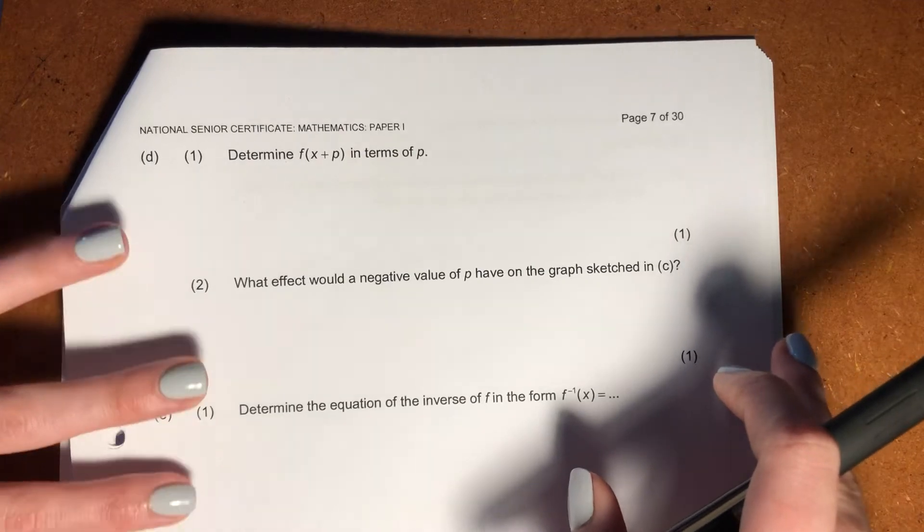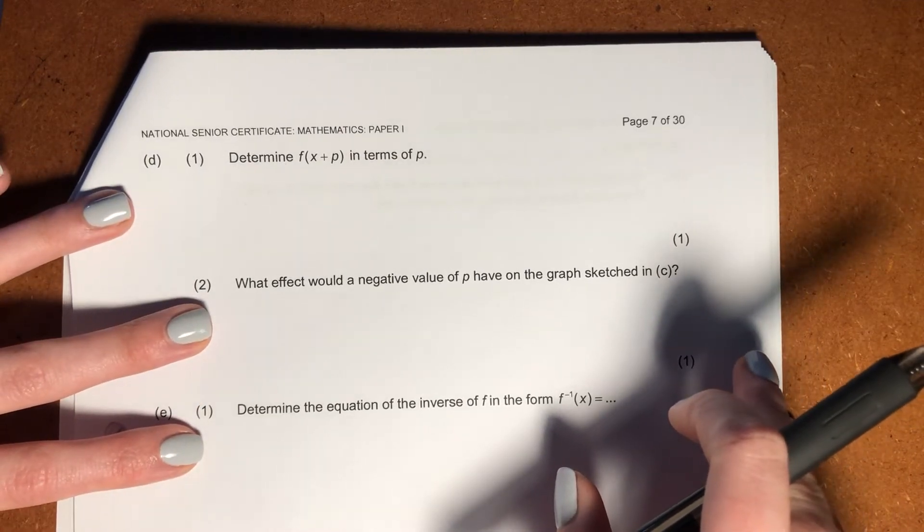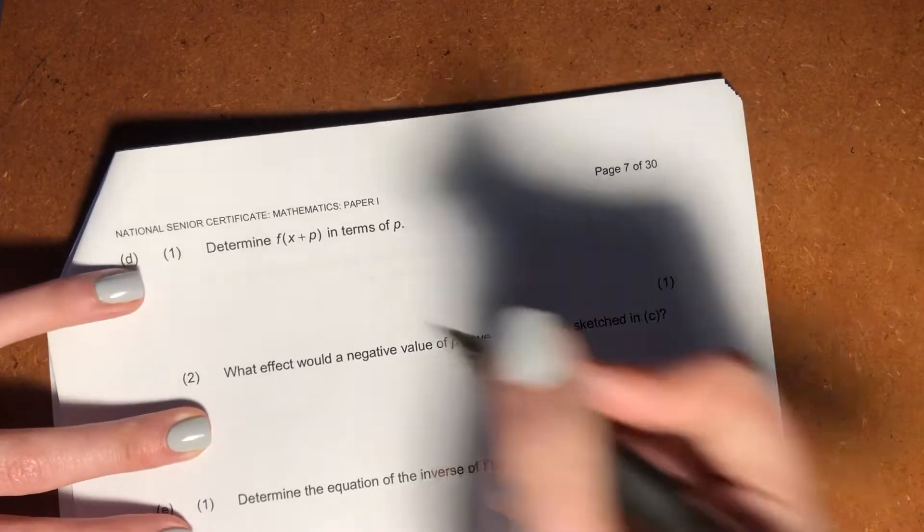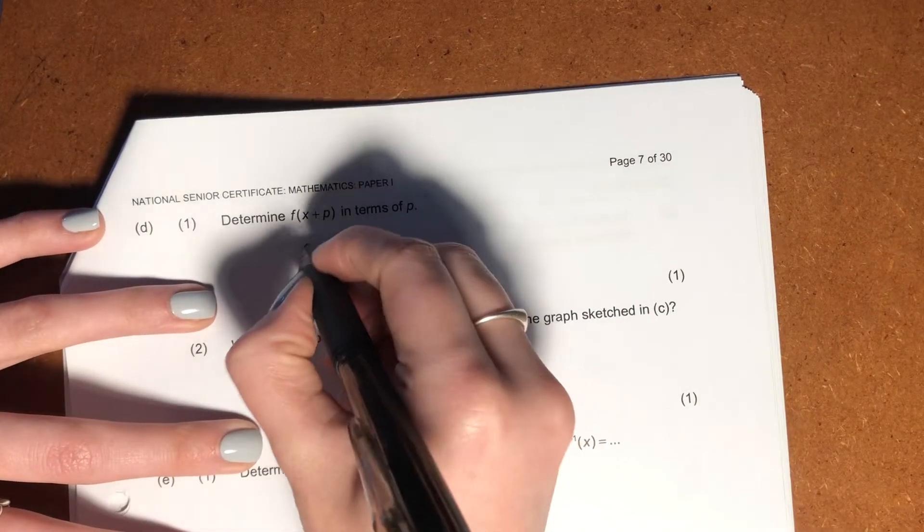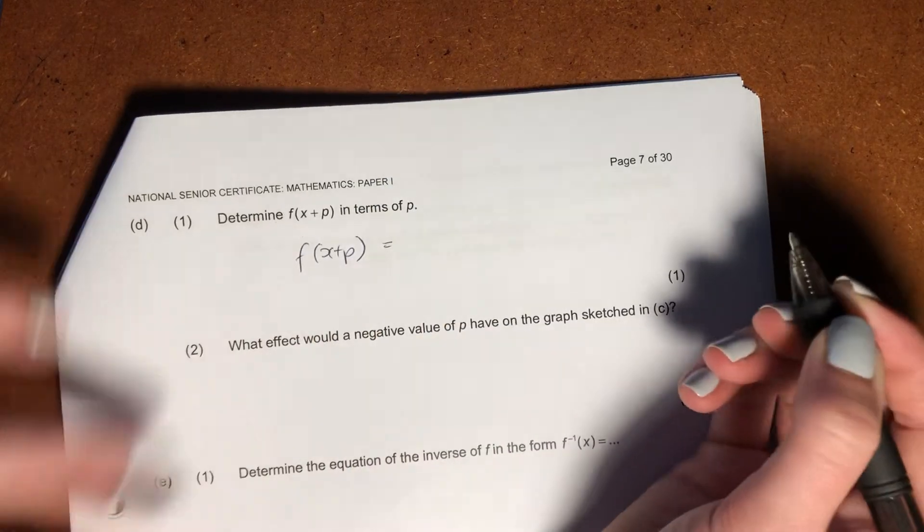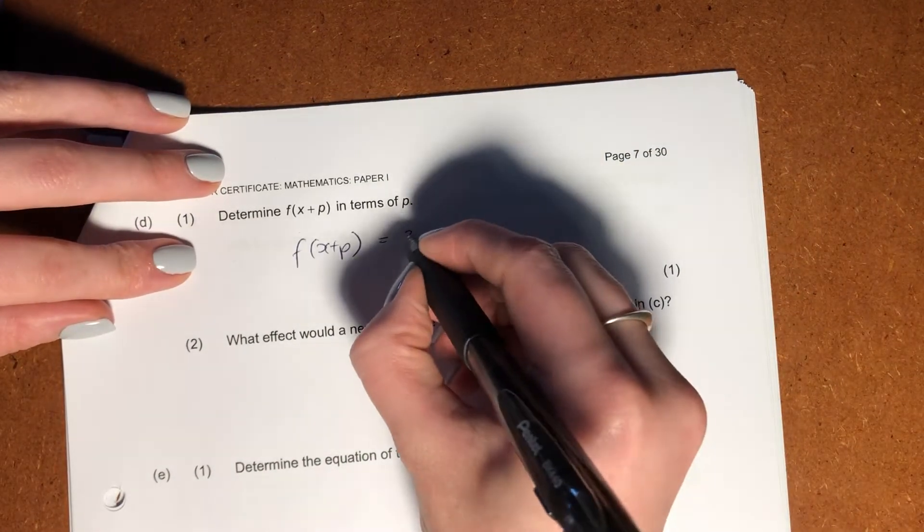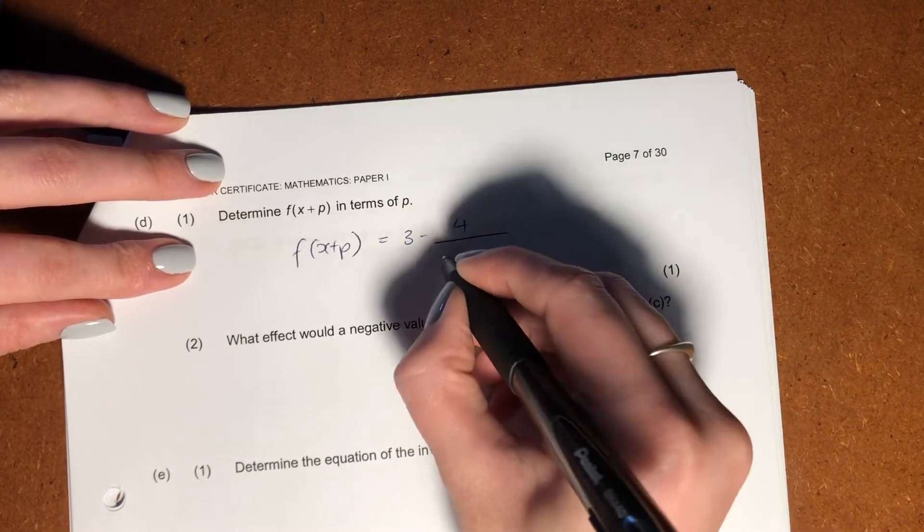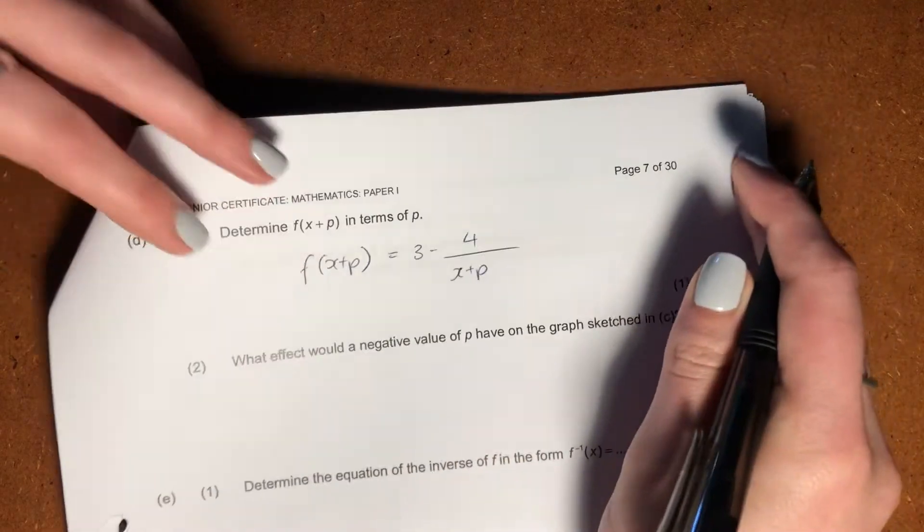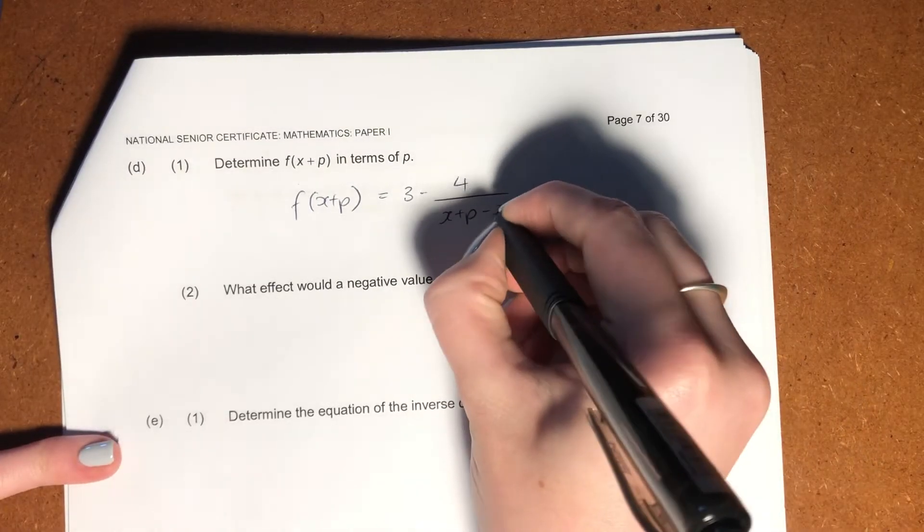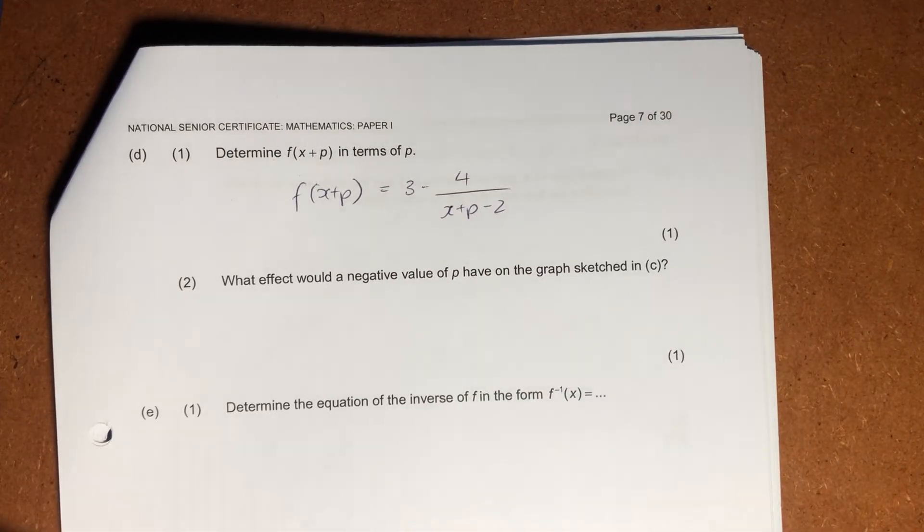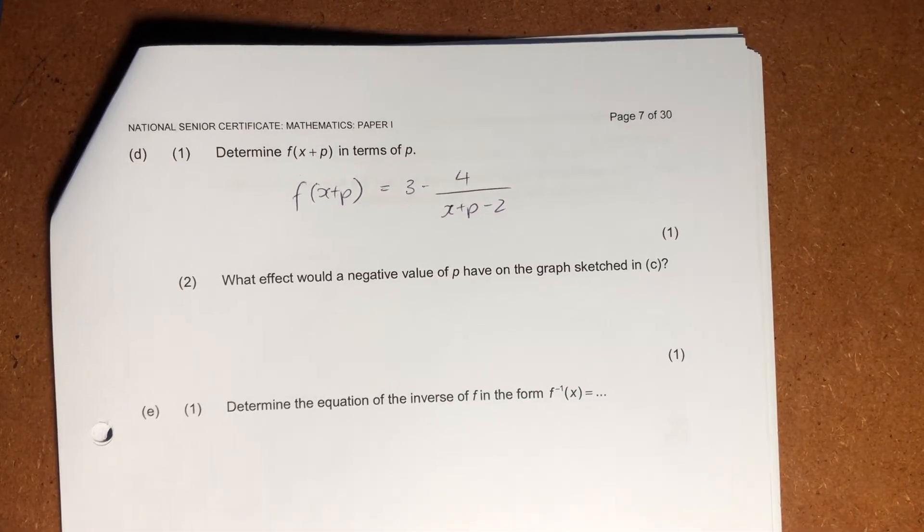Our next question says, determine f of x plus p in terms of p. So we know that f of x, we have that over here. So now wherever there's an x, I'm going to put x plus p. So it's going to become f of x plus p equals three minus four over x plus p, because that's where x was there, minus two. And that is literally us done. It's just a substitution exercise. Quite an easy one mark that.